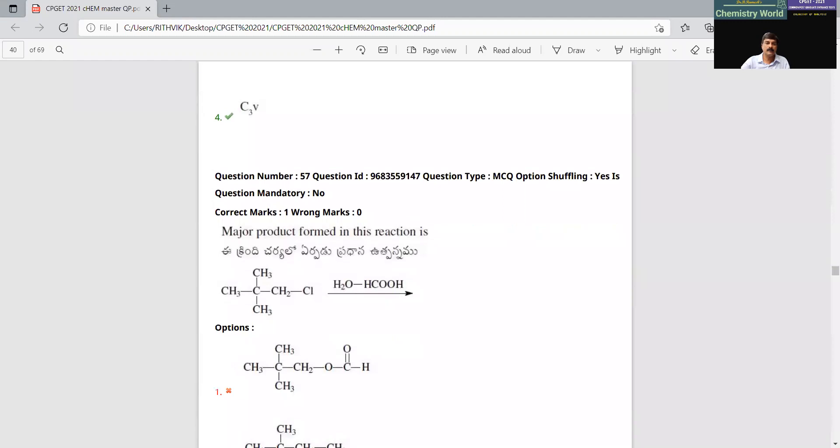So, this will undergo rearrangement, basically. First you will get a carbocation, which is a primary carbocation. This rearranges to a tertiary carbocation. Here you will get the carbocation will be attacked. This is going to be the final product.